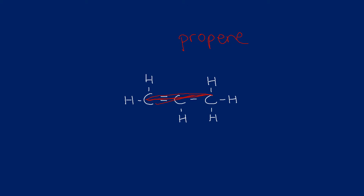You may see some textbooks call this prop-1-ene to show the position of the functional group. Even if the double bond is placed to the right, it's still prop-1-ene because we must use the lowest numbers. We can number the carbon chain left to right (1, 2, 3) or right to left (1, 2, 3). If the double bond is between carbons two and three, numbering in reverse makes it between one and two, so it's still prop-1-ene. In an exam, prop-1-ene would still receive the marks.